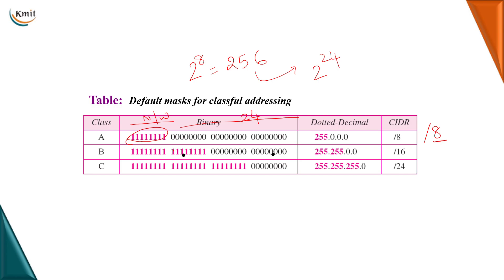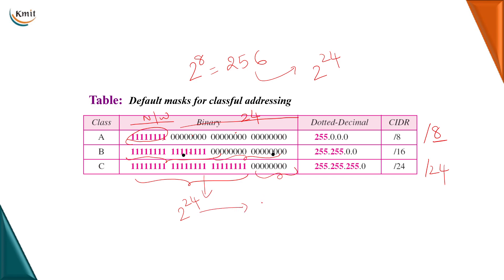In dotted decimal notation, all ones signifies 255, so the mask is 255.0.0.0. Slash 16 means the first 16 bits — the first 2 bytes — are used to specify the network ID and the next 2 bytes are used to specify the host ID, giving 255.255.0.0. And slash 24 means the first 3 bytes, that is 24 bits, specify the network ID and the remaining 8 bits specify the host ID, giving us 2 power 24 network IDs and 2 power 8 hosts per network.